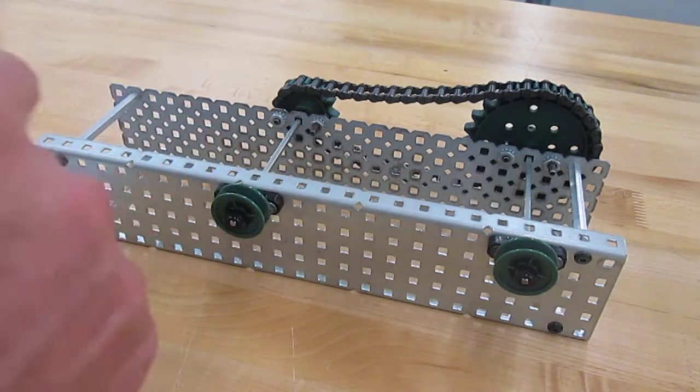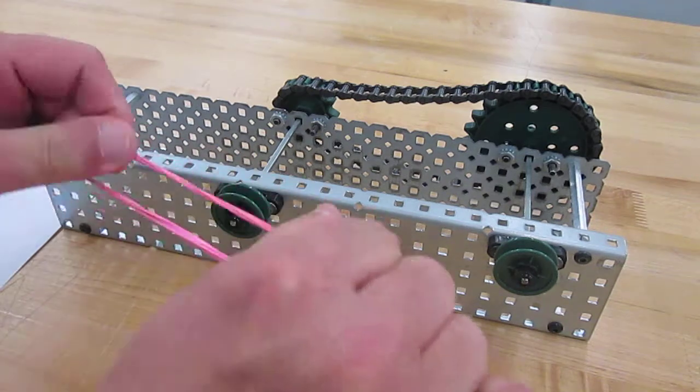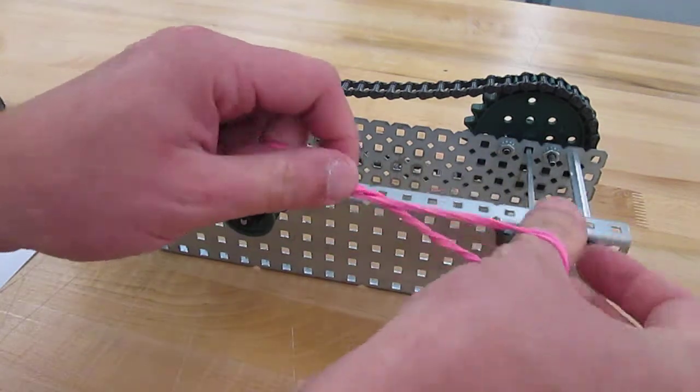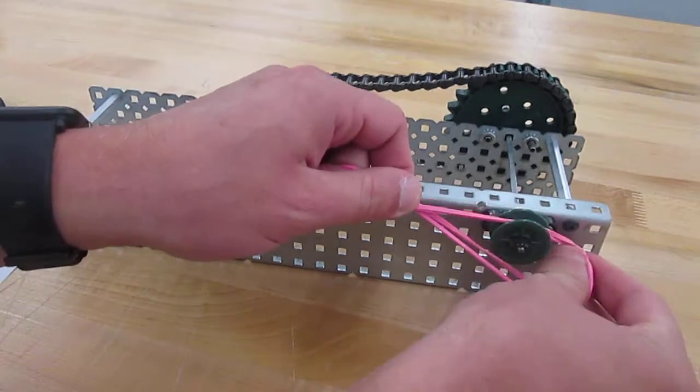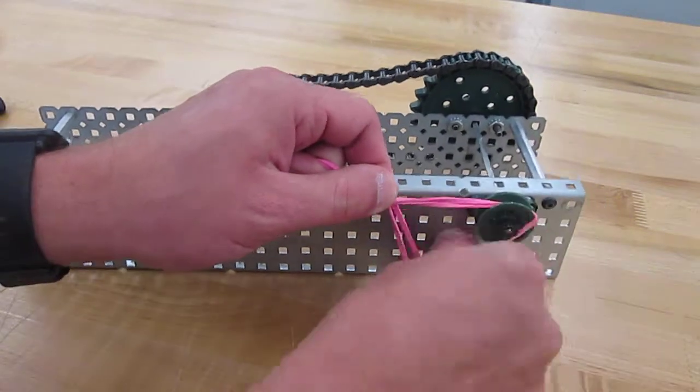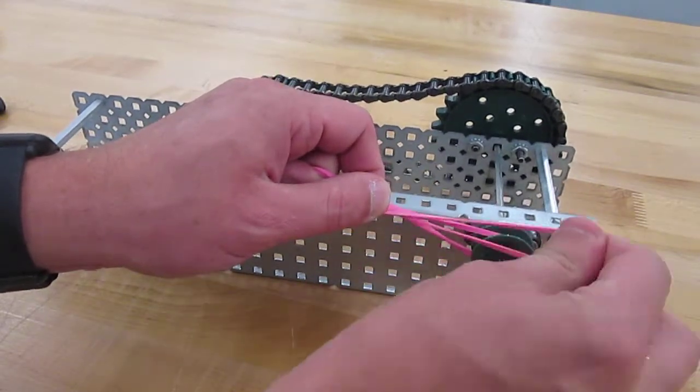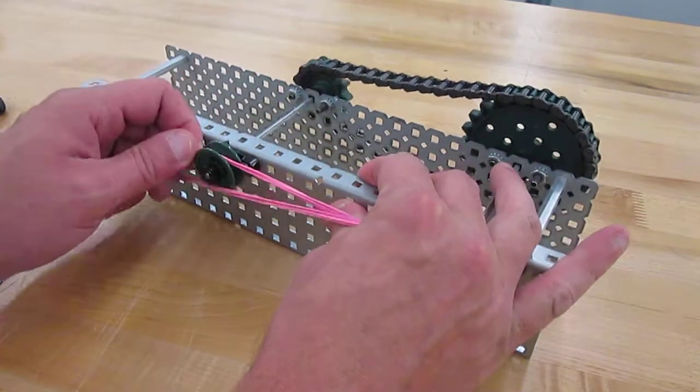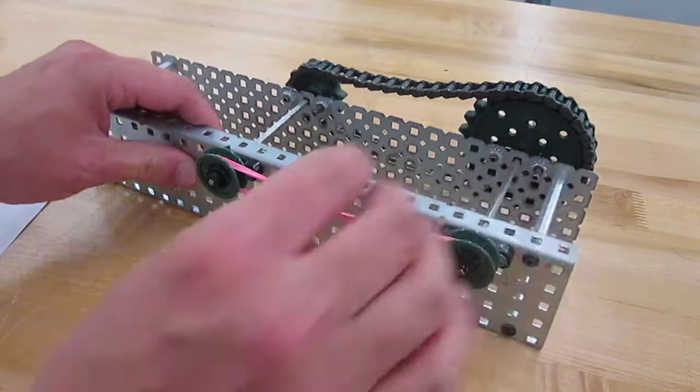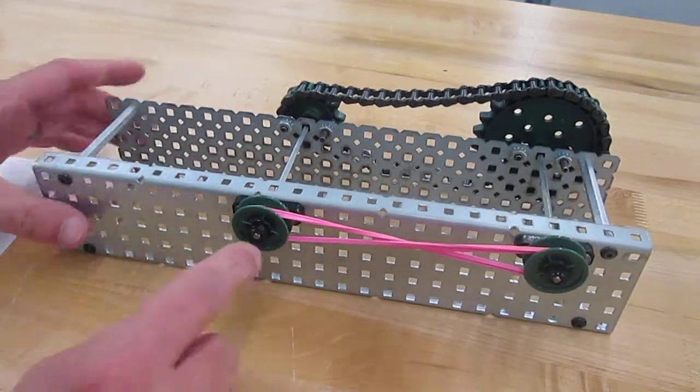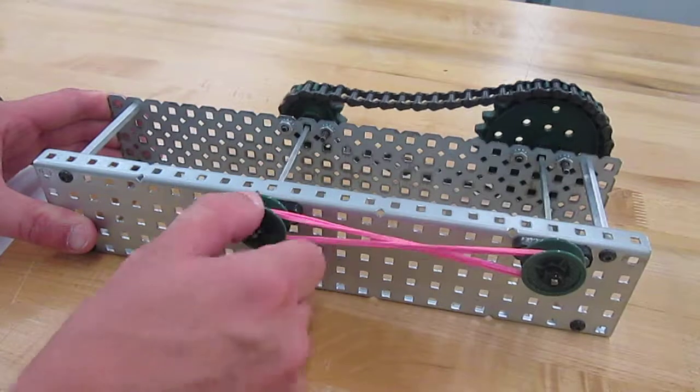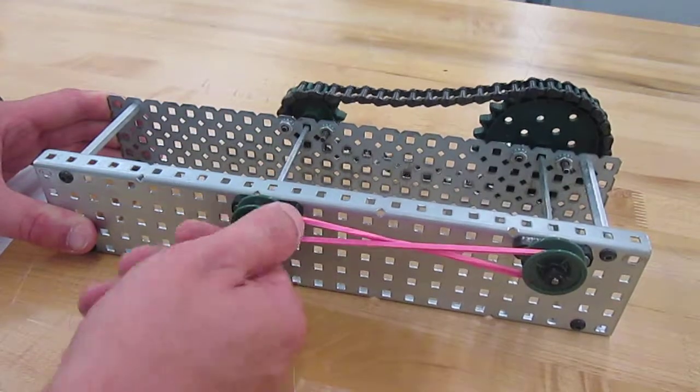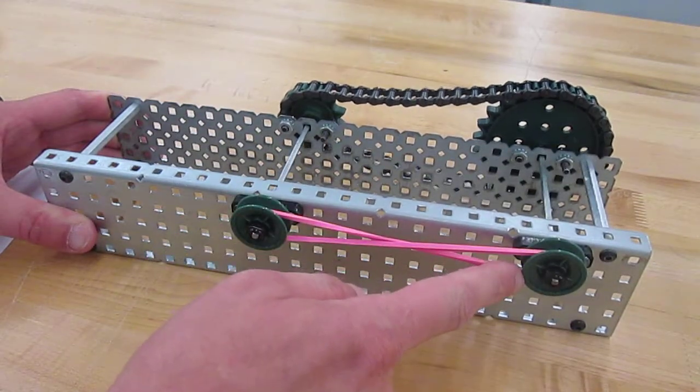And when you do that, you can take the rubber band and you can wrap it around. And what will happen now is when you turn the one pulley, the other pulley will go the opposite direction.